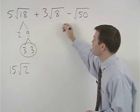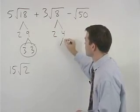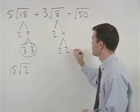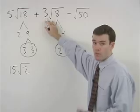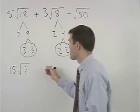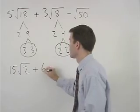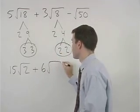In the second term, 8 factors as 2 times 4, and 4 is 2 times 2. So a 2 comes out, which multiplies by the 3 that's already out there, to give us 2 times 3, or 6. And again, we're left with a 2 inside the radical.